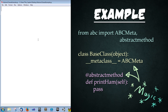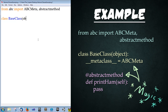First we're going to import some stuff. Start out by typing: from abc import ABCMeta and also abstractmethod, all lowercase. Now we're going to create our base class: class BaseClass, inheriting from the object class. Then type __metaclass__ equals ABCMeta. What this is doing is setting up the metaclass, which is built in with the object class, to basically be an abstract base class.